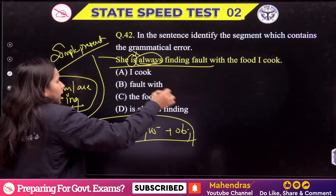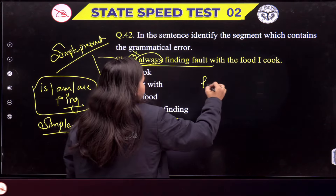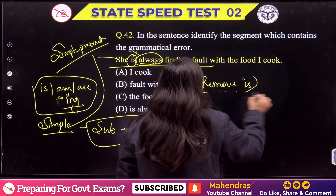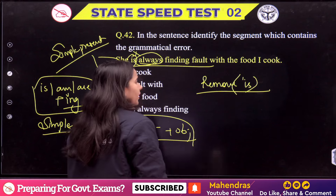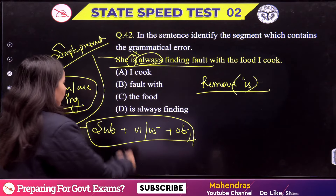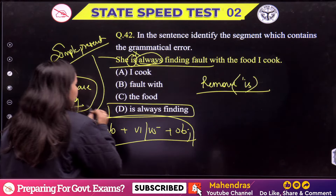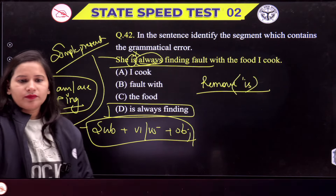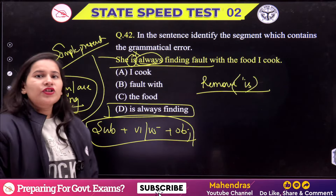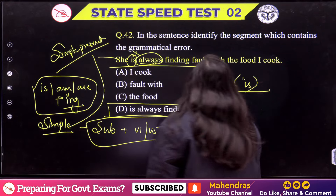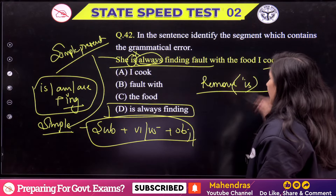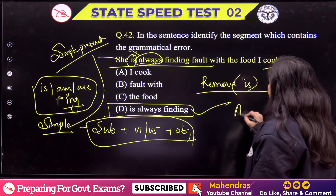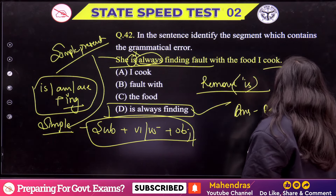So we should remove 'is' from here. The correct form is: 'She always finds fault with the food I cook.' That is where the error occurs. The answer is Option B.